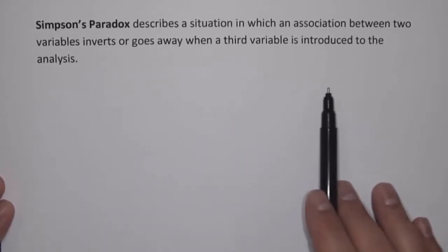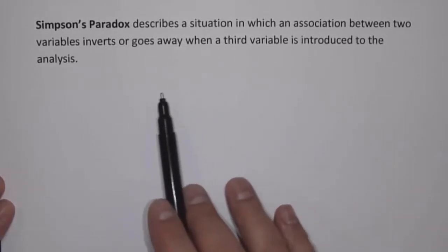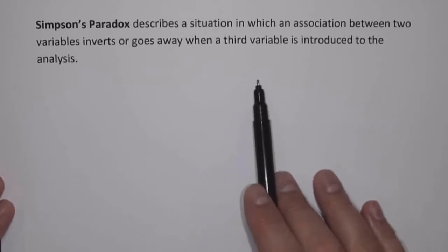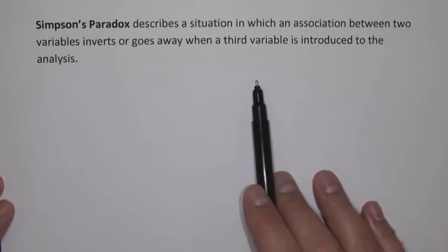So in other words, what's going to happen is it's going to look like there's an association between two variables, but when you look at it a little differently by including a third variable, then the relationship that appeared to exist either reverses, inverts, or disappears.